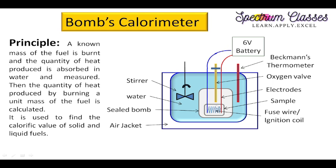The principle of the bomb calorimeter: a known amount of fuel is placed in the sample crucible and burned in the presence of oxygen using the fuse wire. As soon as the battery is connected, the fuse wire burns and ignites the fuel. As the fuel burns, the temperature rises and that heat is dissipated to the water bath. The temperature rise is measured by the Beckmann thermometer, and the mechanical stirrer homogenizes the water.